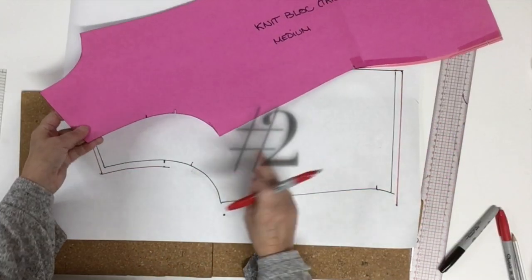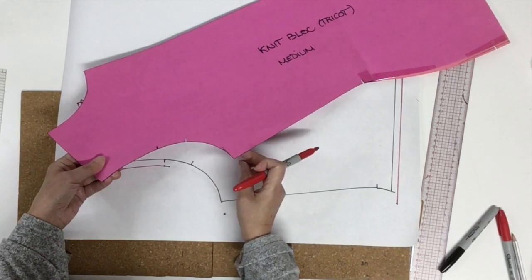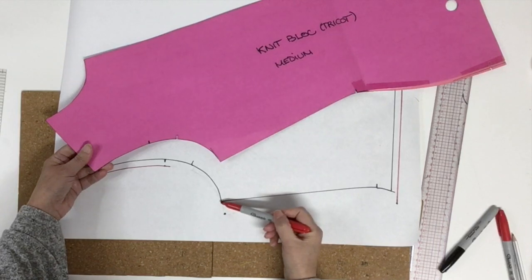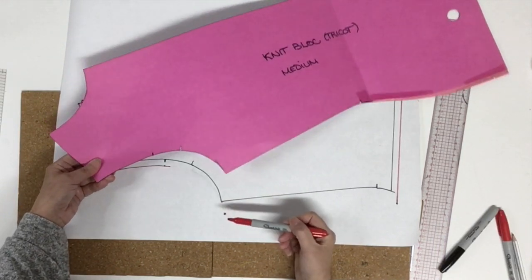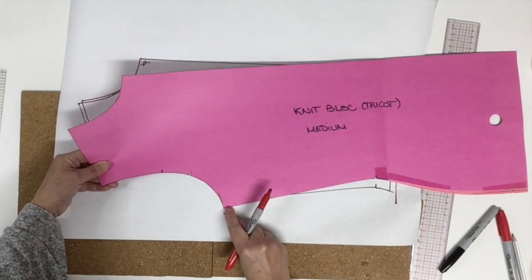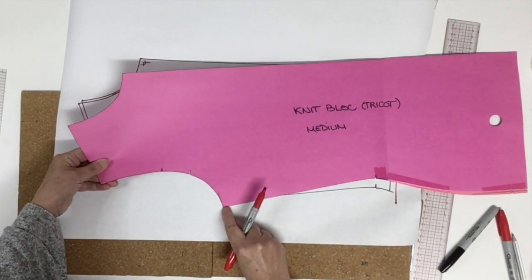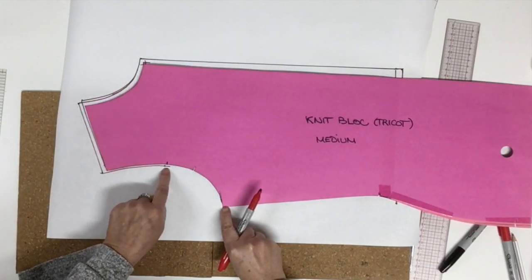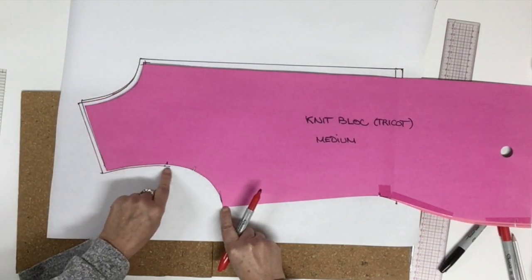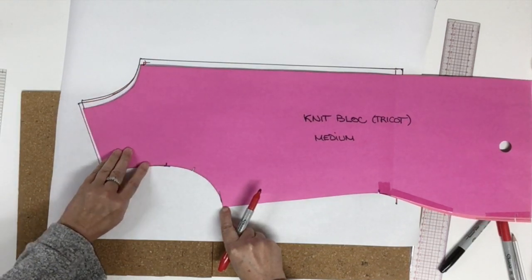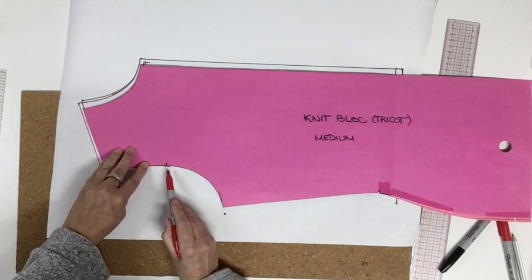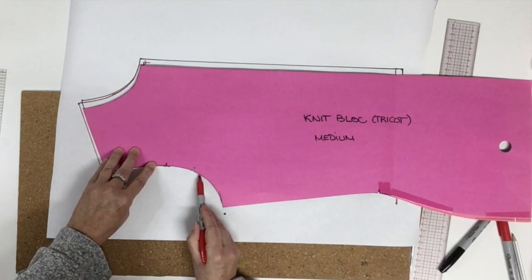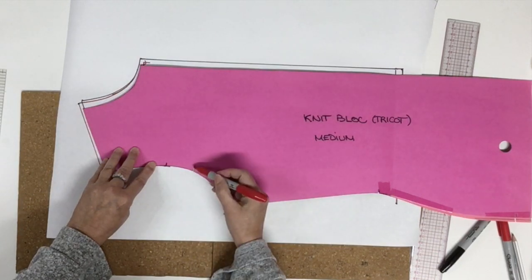The next step is to place the underarm and side seam point right between the original point and the new one, so just right in the middle like that. You hold it, you pivot the pattern until you touch the new shoulder blade or across the front point right here. Now we'll be able to trace from where we left until a little bit after the notch, and you do trace your notch.